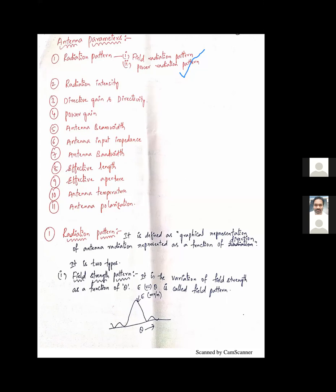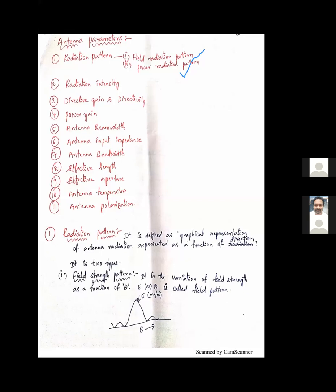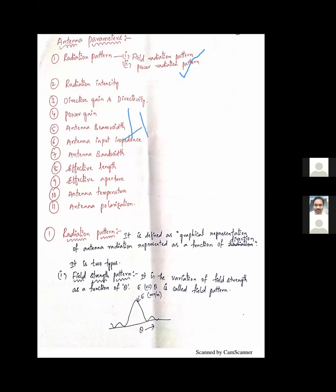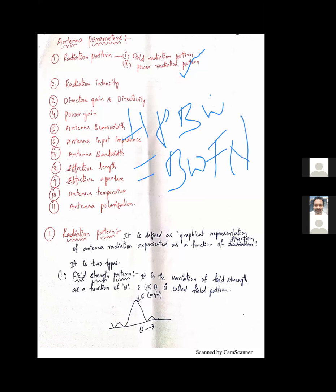The definition of Half Power Beam Width (HPBW) is the angular width which is half of that of BWFN. Formula-wise, it is represented as HPBW = BWFN / 2.